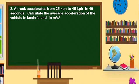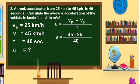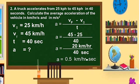Let us have another example. A truck accelerated from 25 kilometers per hour to 45 kilometers per hour in 40 seconds. Calculate the average acceleration of the vehicle in kilometers per hour per second and in meters per second squared. So we have initial velocity 25 kph, final velocity 45 kph, and time 40 seconds. Using the formula: A equals 45 kph minus 25 kph over 40 seconds, which gives A equal to 20 kph over 40 seconds, so A equals 0.5 kilometer per hour per second.